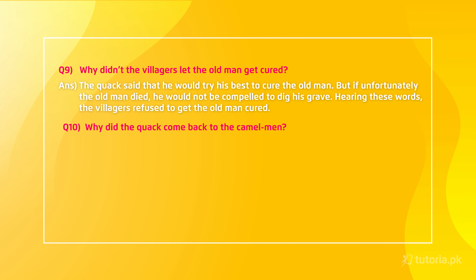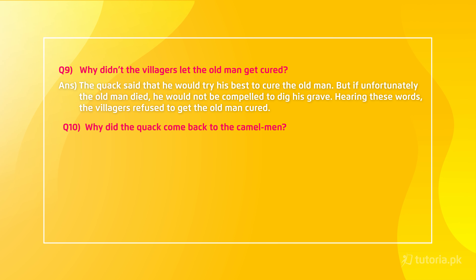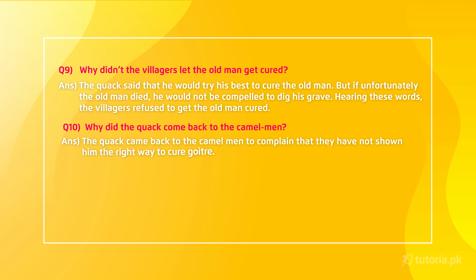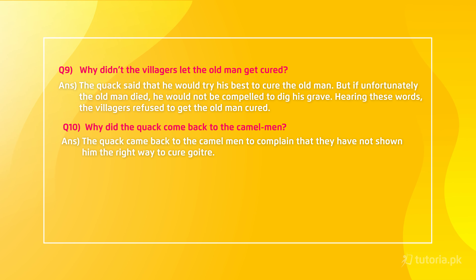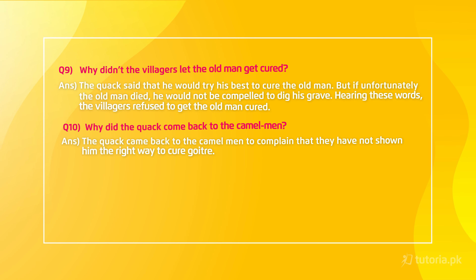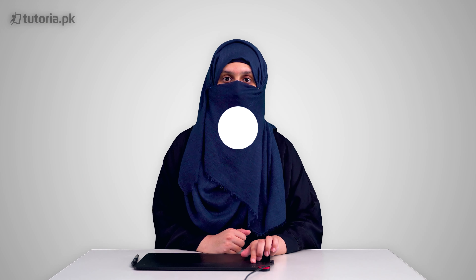The last question in this exercise is: Why did the quack come back to the camel man? The quack came back to the camel man to complain that they had not shown him the right way to cure goiter. Now we are done with the exercise of question answers as well.